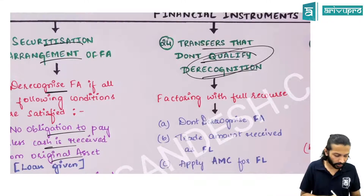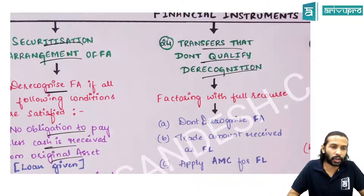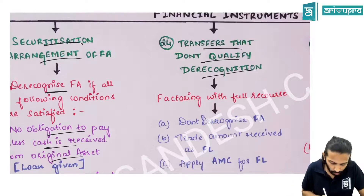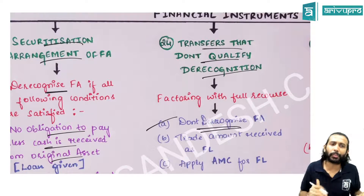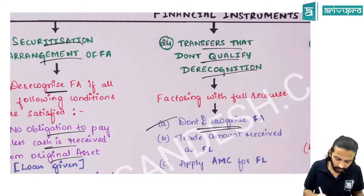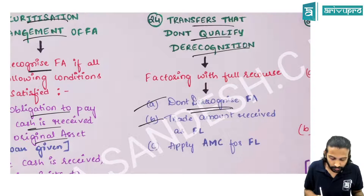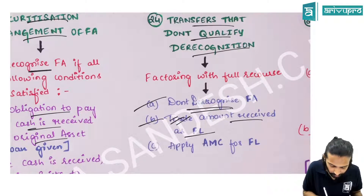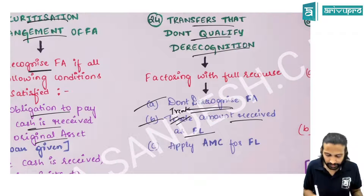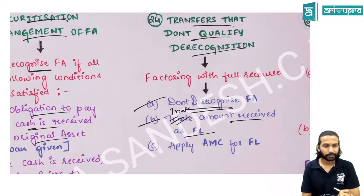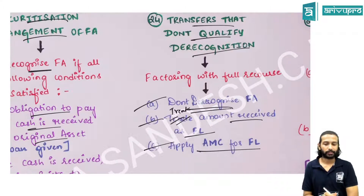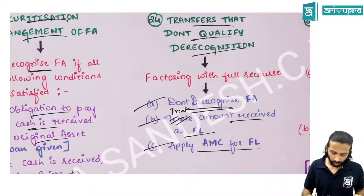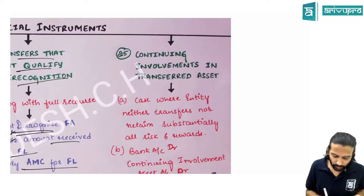If the transfer does not qualify for derecognition, the financial asset is not cancelled. The amount received from investors is treated as a financial liability, and the ACM method is applied to that financial liability.